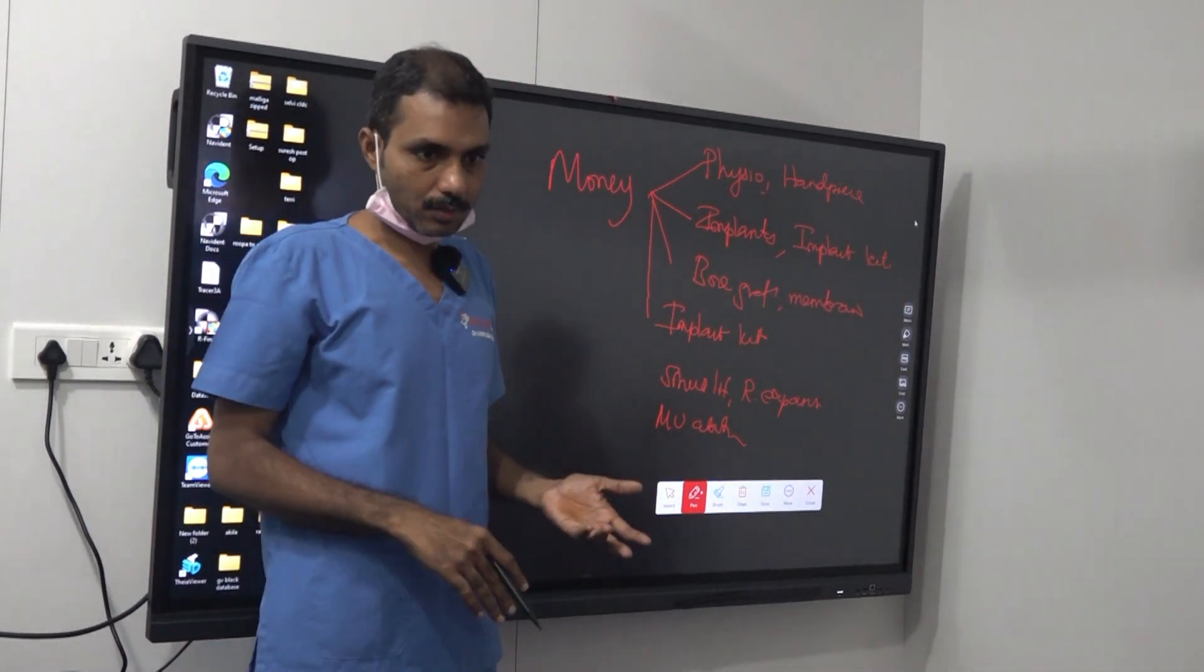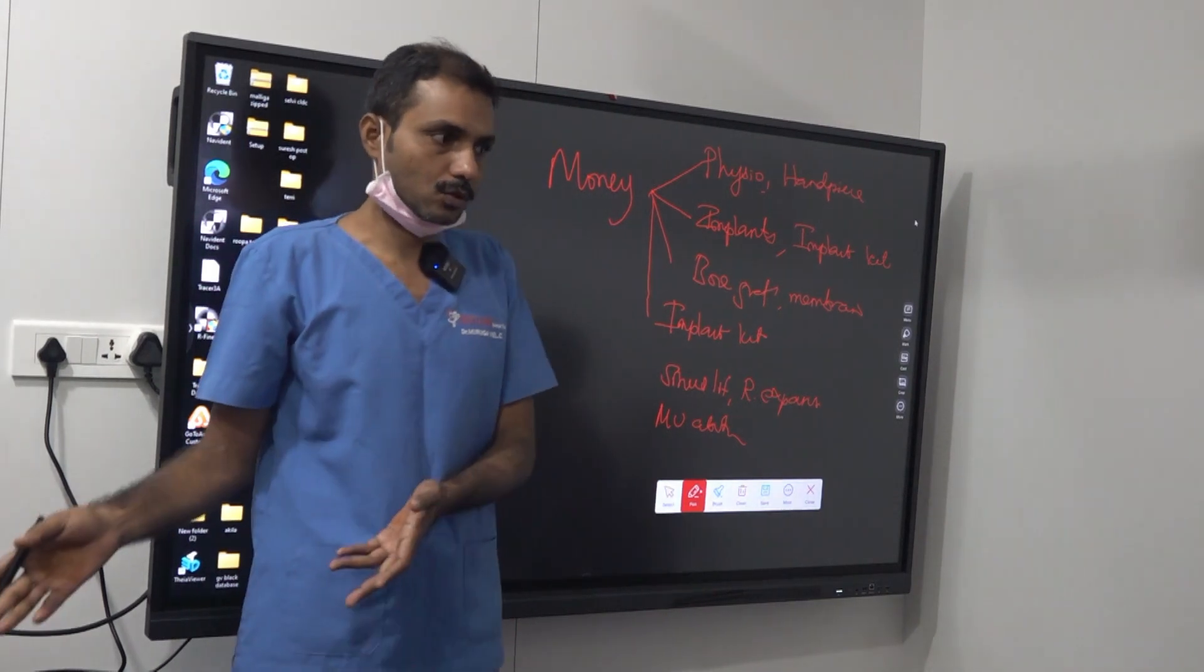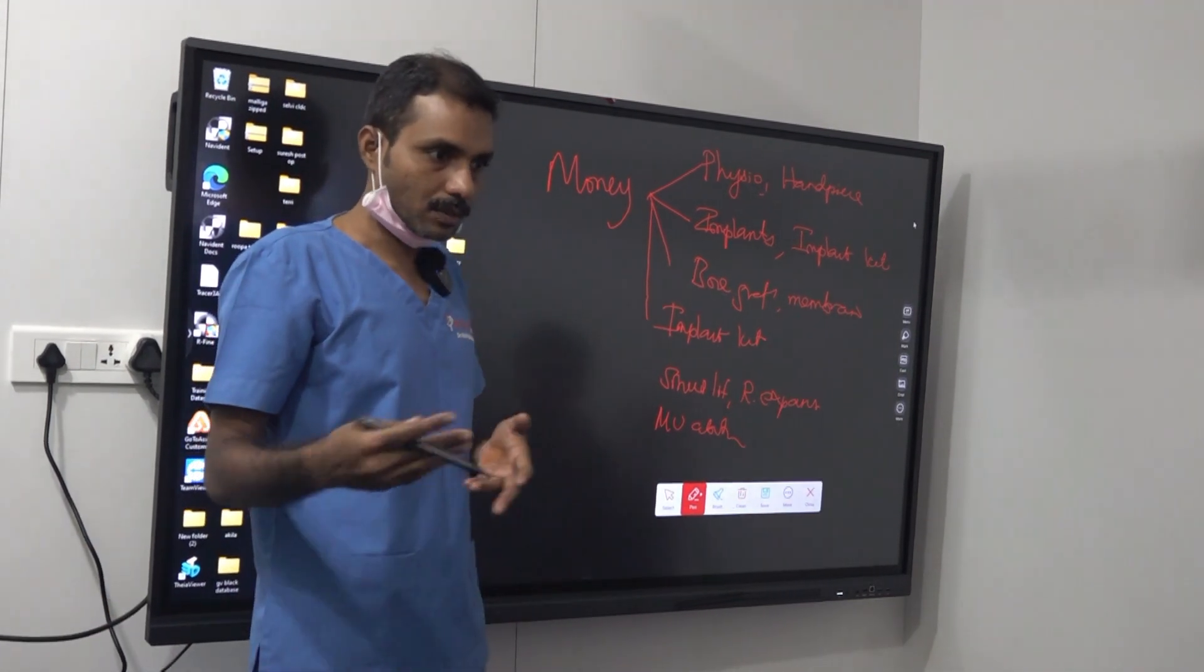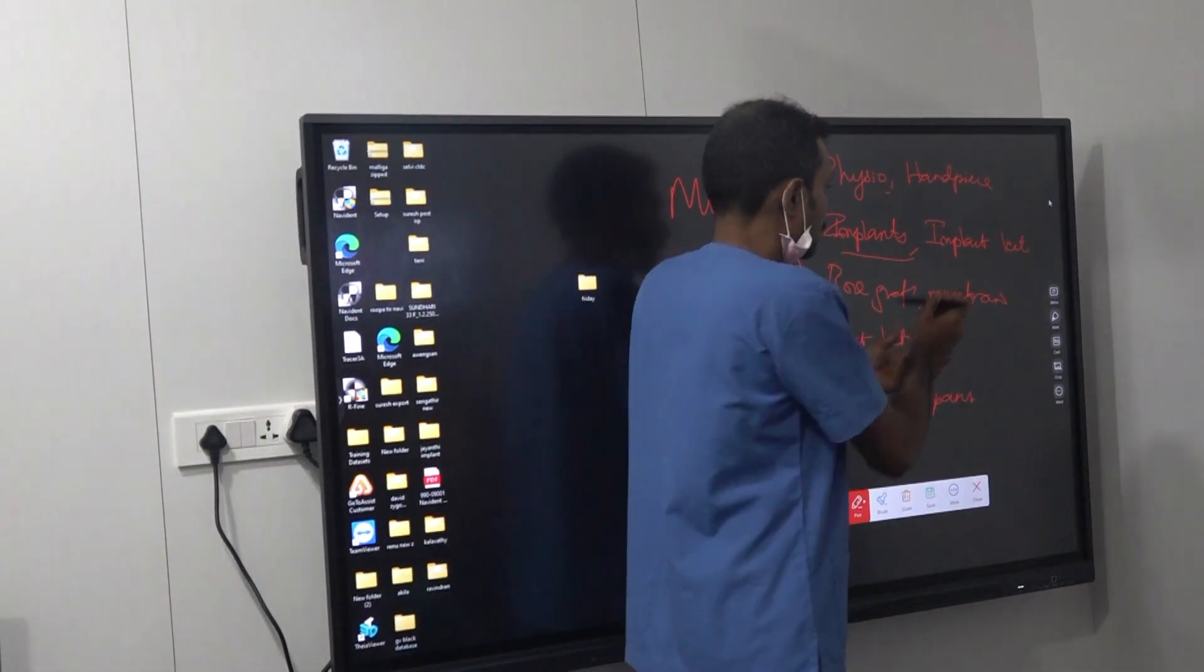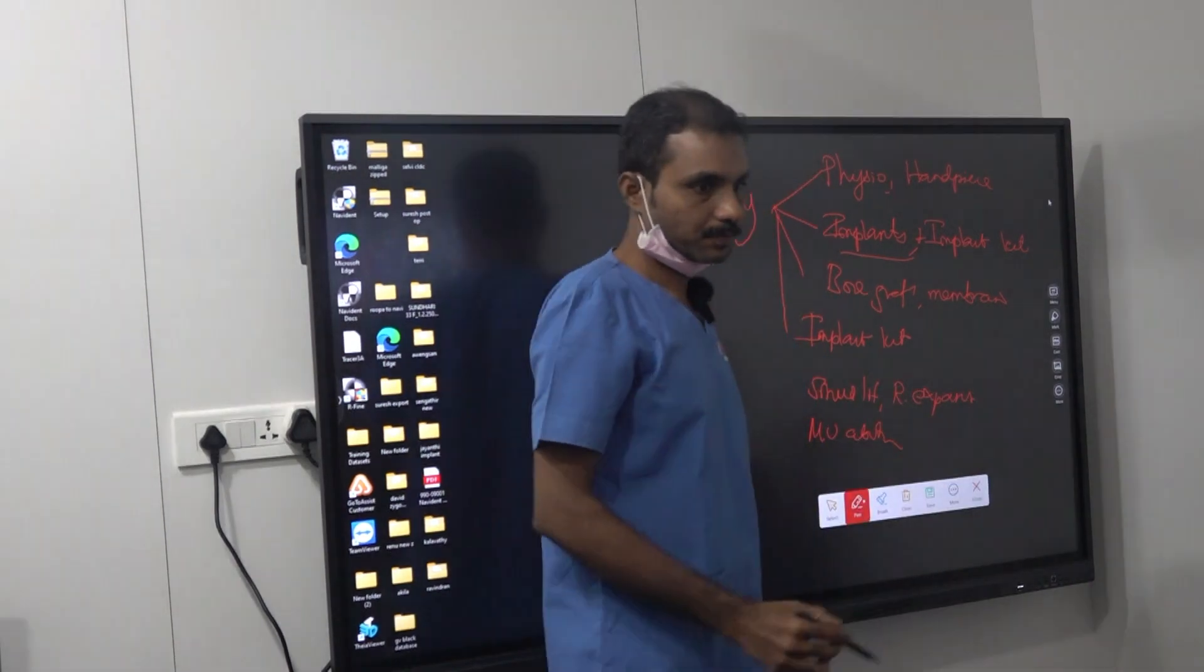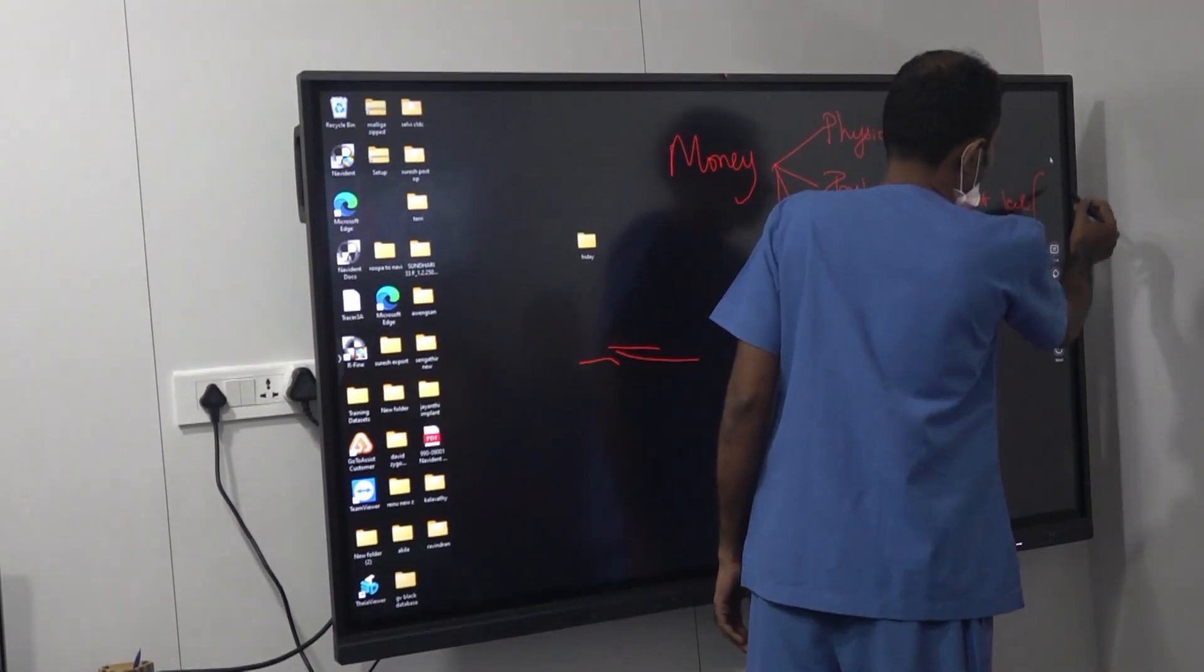Sometimes it may not be interchangeable and may not be compatible with the noble biograph. But some companies they are interchangeable - the same components you can use. So you need implants and that company implant kit. Within the kit, what are all the components we will discuss.